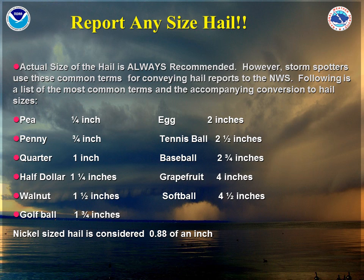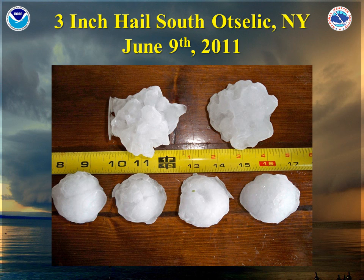Hail of any size is reportable, and we urge you to report any hail to the National Weather Service in Binghamton. For instance, one quarter inch hail is about the size of a pea. Hail can range all the way up to a quarter, which is around an inch, or even a softball, which is around four and a half inches. Here's an example of three-inch hail collected in South Otselic, New York on June 9, 2011.